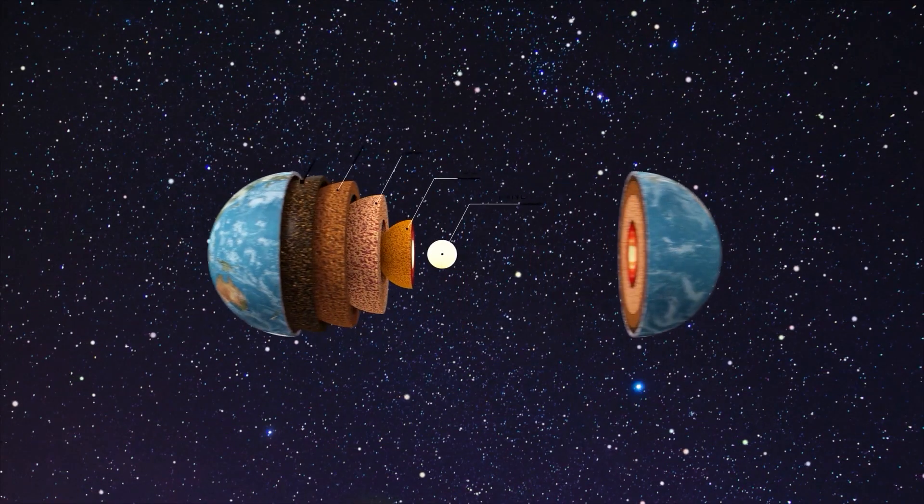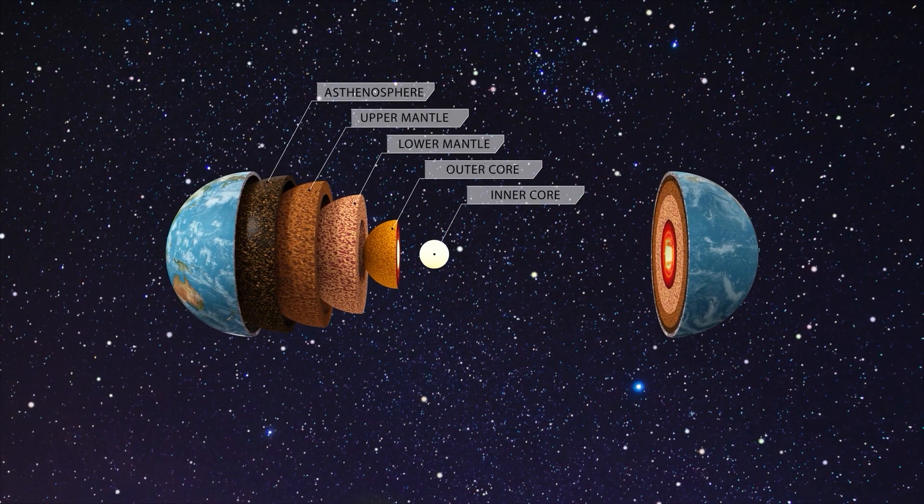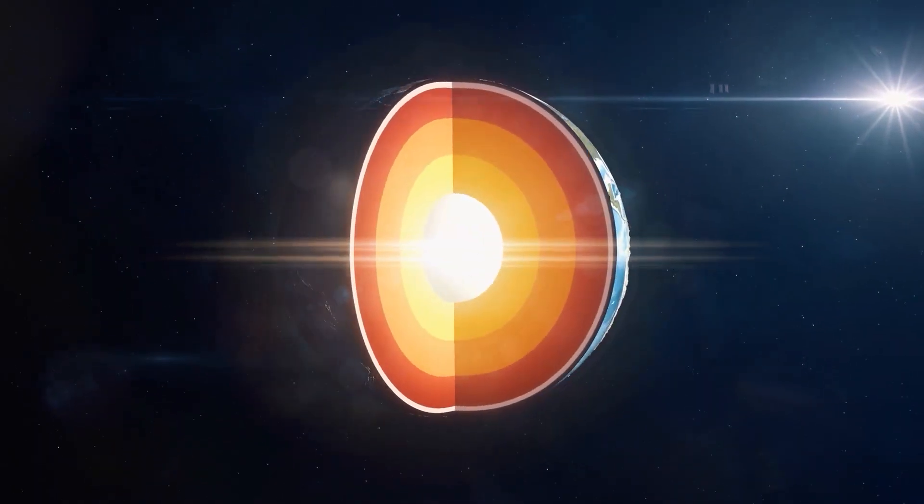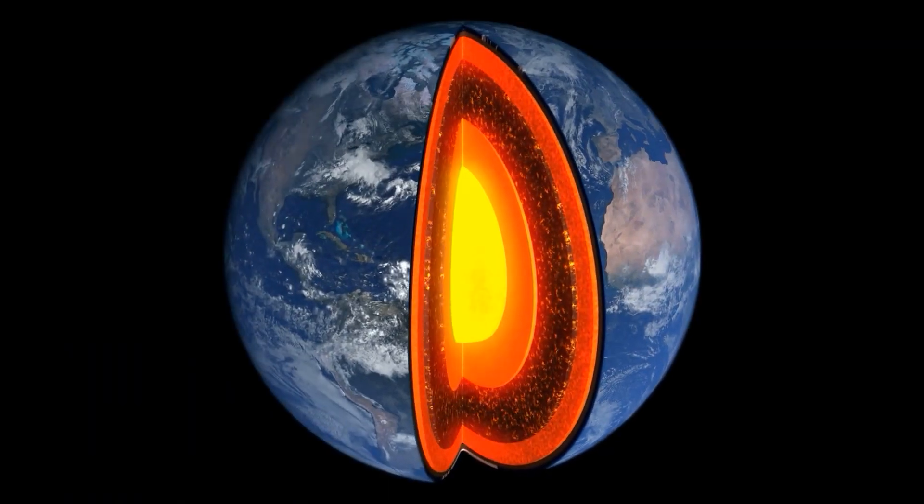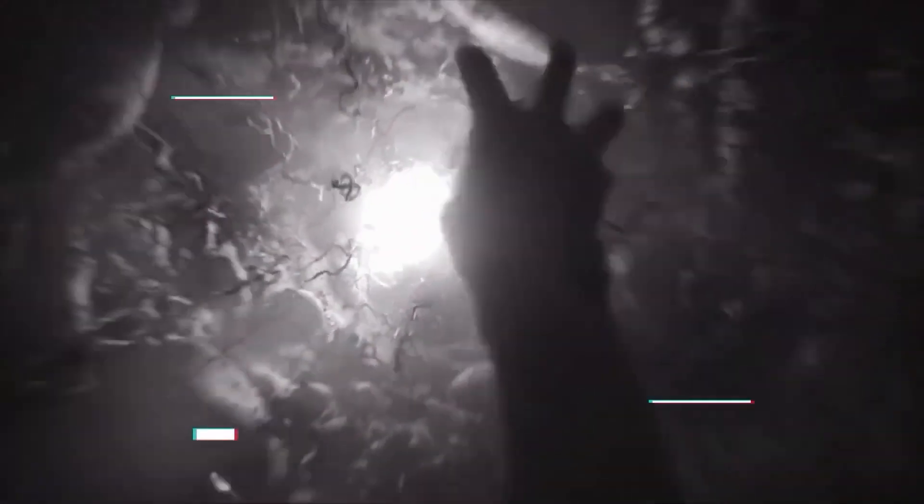I'm talking about the core of the planet, the innermost layer that's made of solid iron and nickel surrounded by a molten layer of the same metals. The core that's so hot and dense that it would crush you like a soda can if you ever tried to visit it.